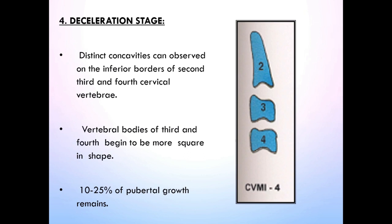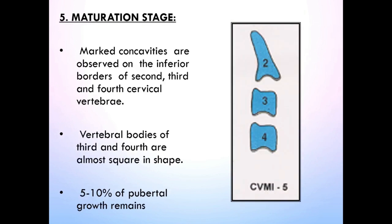Stage 4 is Deceleration. Distinct concavities can be observed on the inferior borders of C2, C3, and C4. Vertebral bodies of C3 and C4 begin to be more square in shape. 10–25% of pubertal growth remains. The peak in mandibular growth has occurred within one or two years before this stage. The main characteristic is concavity at the lower border of C4, and the peak interval ends at this stage or has ended.